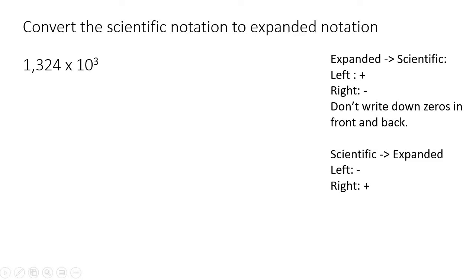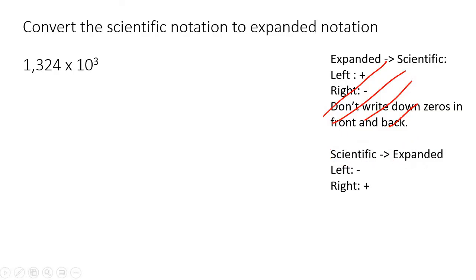Now we're going from scientific to expanded. As soon as there's a times 10, that means scientific. So the next examples go from scientific to expanded. If the exponent is a positive number, then we move the decimal to the right — three places to the right. So you go 1, 2, 3 and end up with 1, 3, 2, 4.